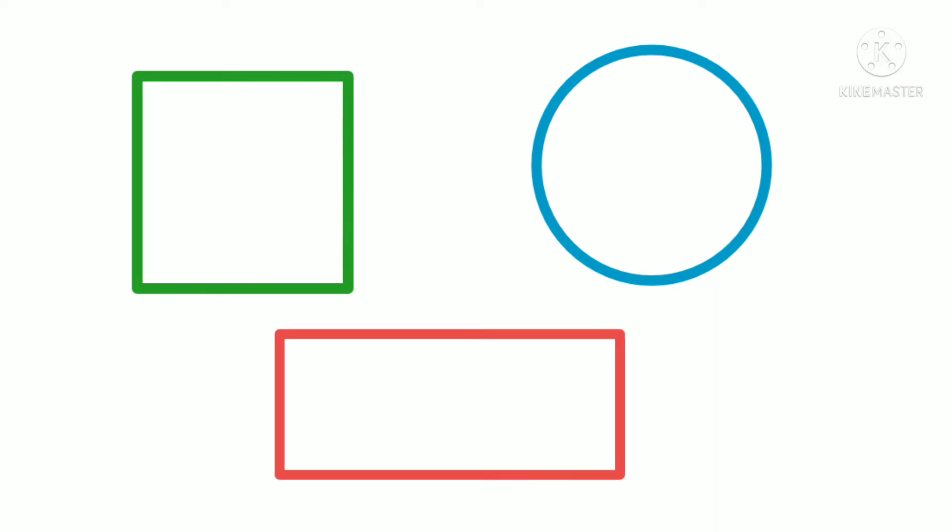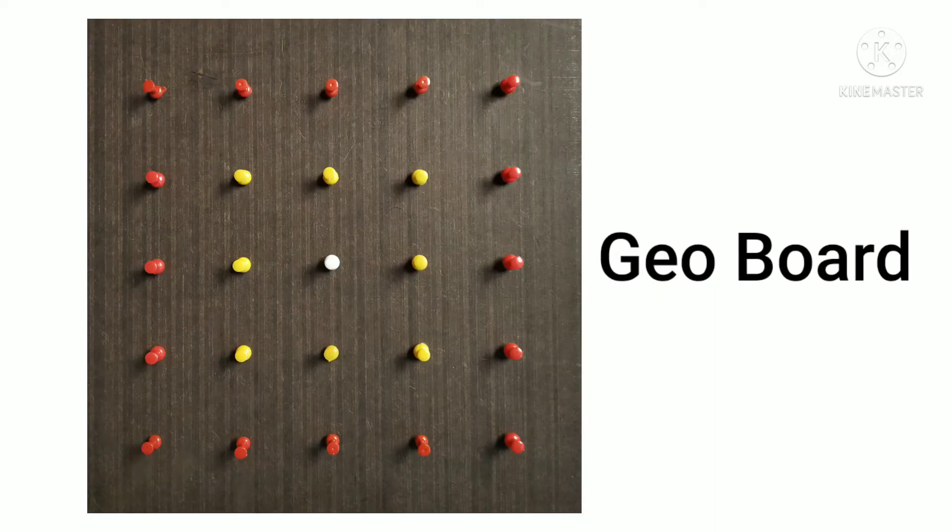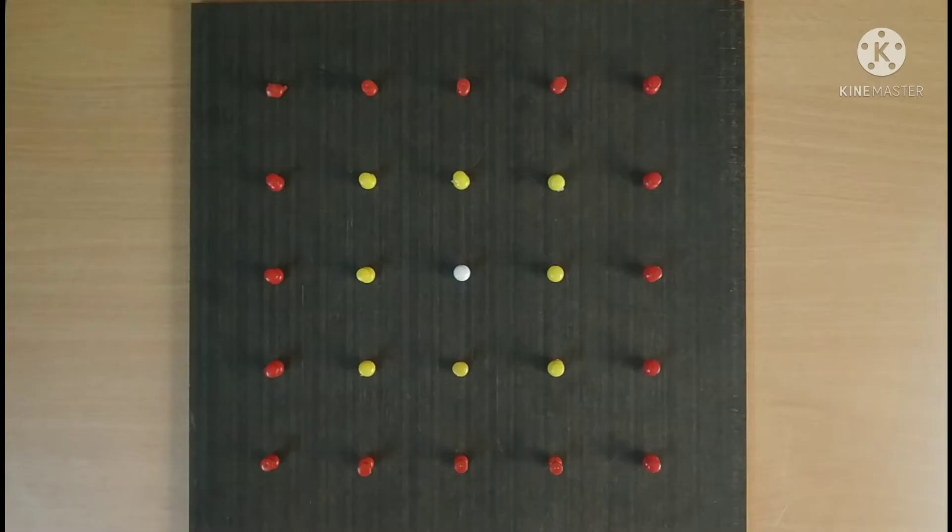So, a 2D shape is anything which can be drawn on a plane. You can make this geoboard by yourself, check for the link in the description box. Now, we will learn some shapes using geoboard.